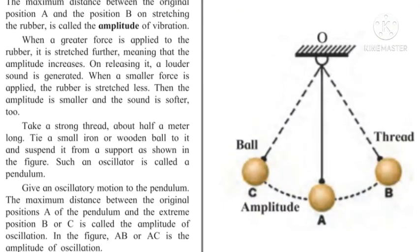Now take a strong thread about half a meter long. Tie a small iron or wooden ball to it and suspend it from a support as shown in the figure. Such an oscillator is called a pendulum. Give an oscillatory motion to the pendulum. The maximum distance between the original position A of the pendulum and the extreme position B or C is called the amplitude of oscillation. In the figure, AB or AC is the amplitude of oscillation.